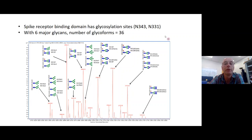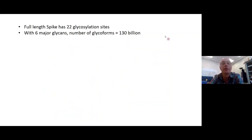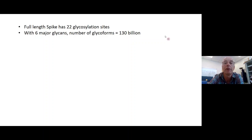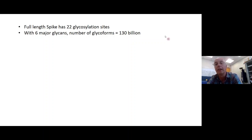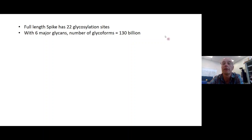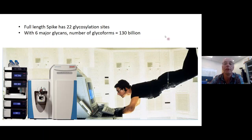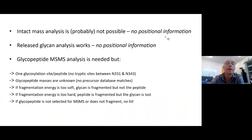On the full-length spike protein things are a lot more complicated. Assuming only six major glycans across 22 N-linked glycosylation sites, the number of possible glycoforms is a ridiculously large number. If you try to analyse that by intact mass, the signal will completely disappear. So intact mass analysis is probably not possible, and even if it were, it's not giving you positional information. You can do released glycan analysis, but again this will not give positional information. That means you're going to have to do glycopeptide analysis and MS-MS.